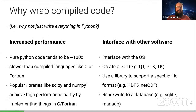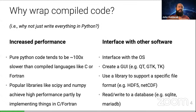Why would you want to wrap compiled code and call it from Python? Why not just write everything in Python? The first reason is performance. Pure Python code tends to be about 100 times slower than compiled languages like C or Fortran. You don't have to write C or Fortran directly to get better performance, because you can use libraries like SciPy and NumPy to speed things up. The reason we get better performance with them is in large part because a large portion of SciPy and NumPy is actually written in C and Fortran.